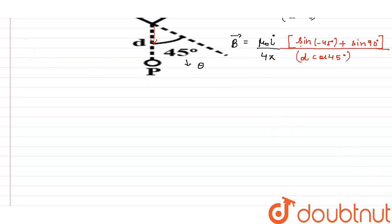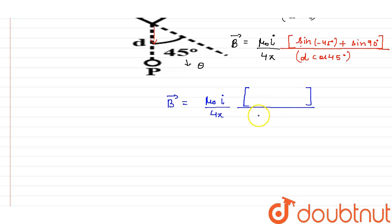Simplifying: B = (μ₀I) / 4π. Now, sin(90°) = 1 and sin(−45°) = −1/√2. So the numerator bracket becomes 1 − 1/√2. The denominator has d·cos(45°) = d × (1/√2).